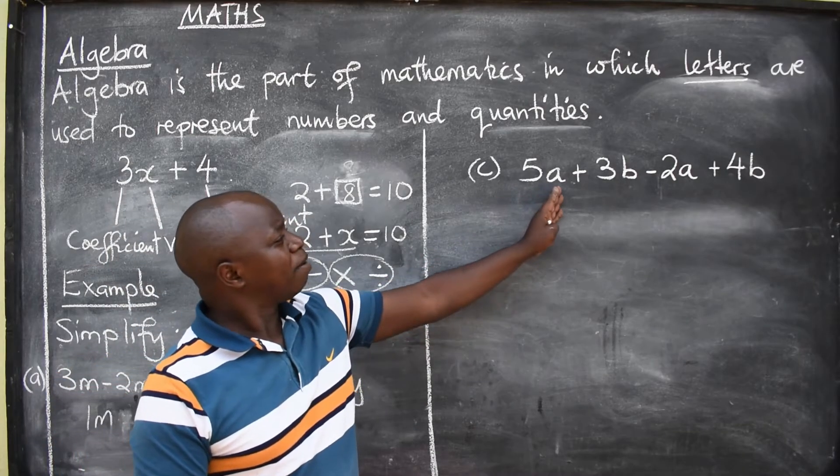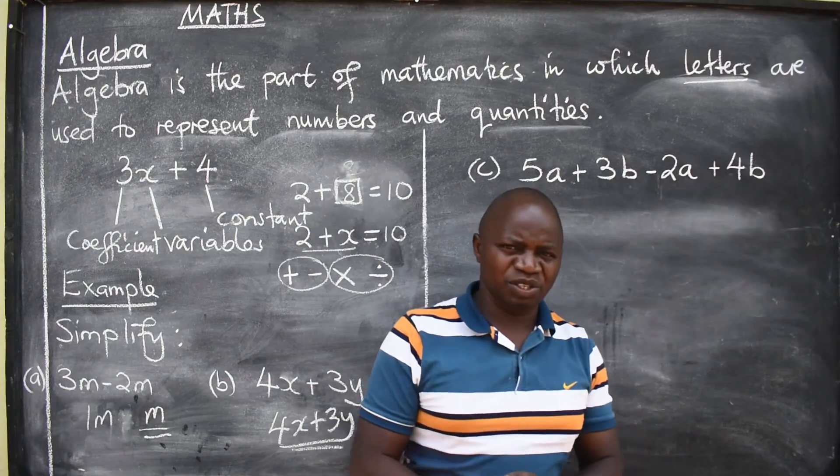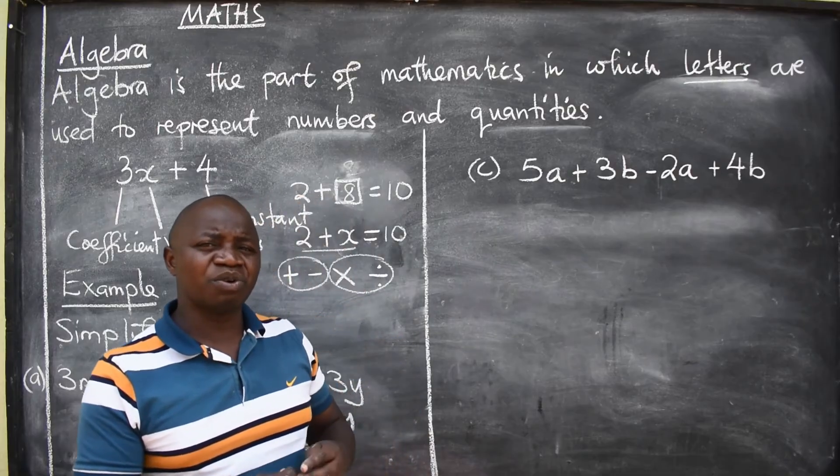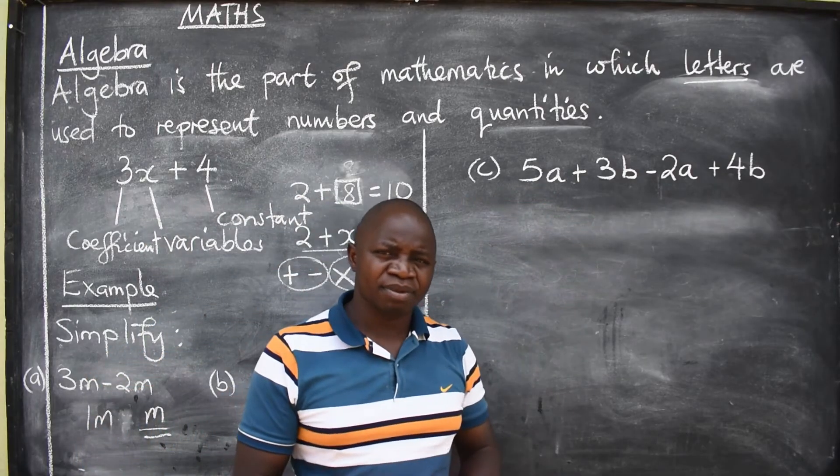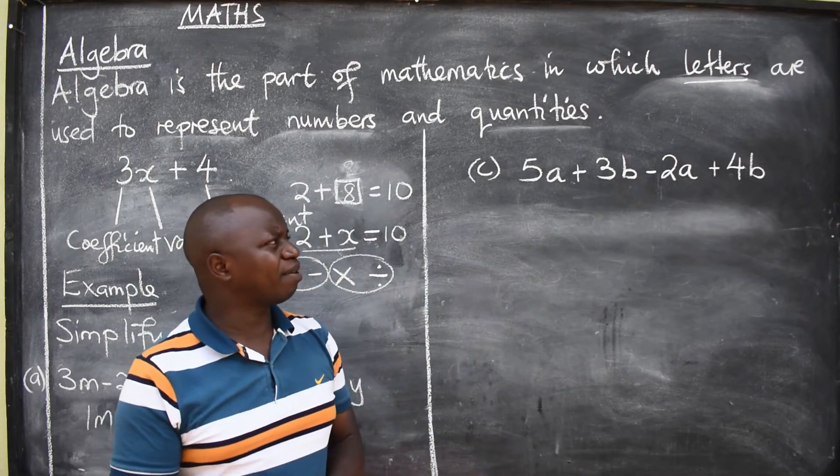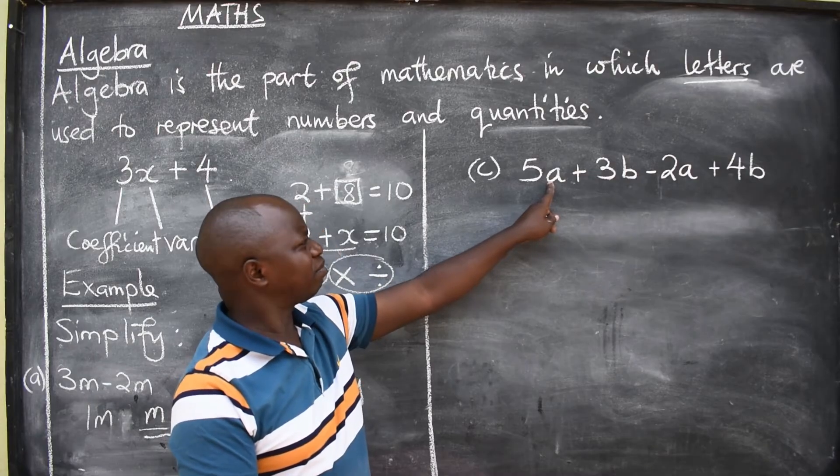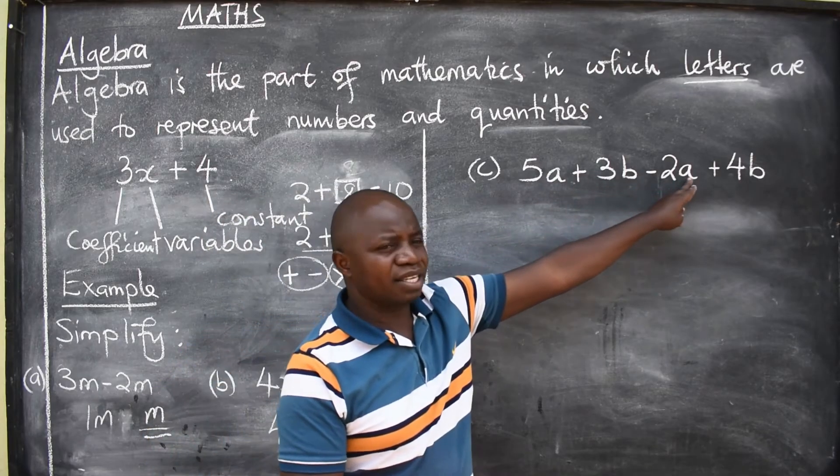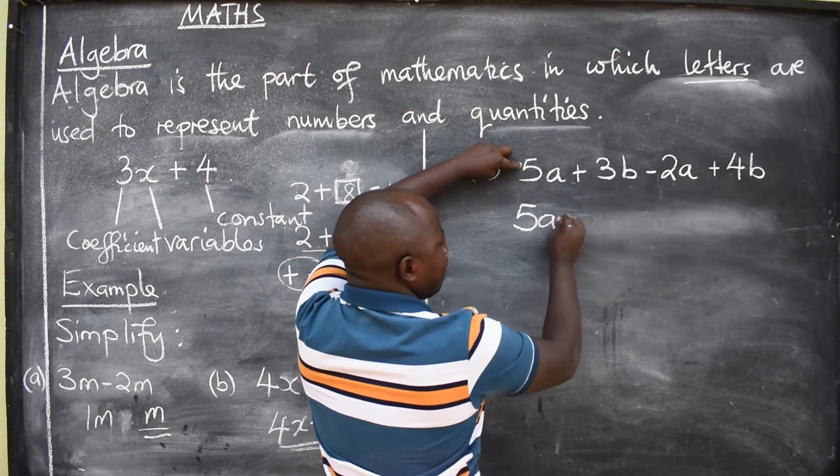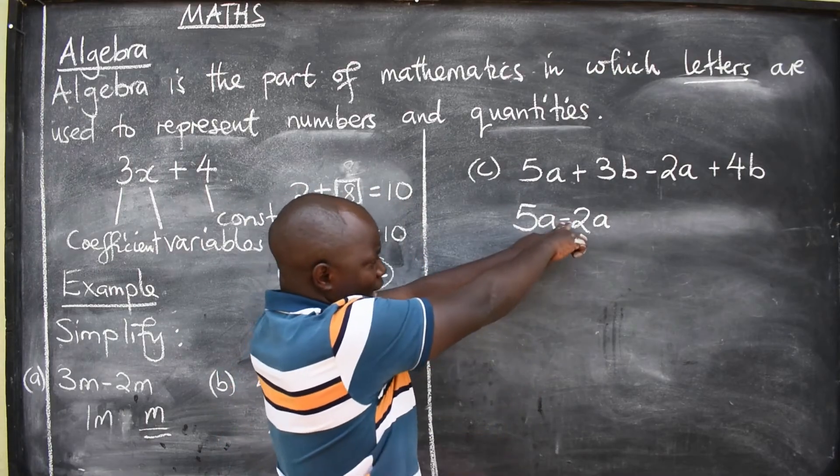We now proceed to C. 5A plus 3B minus 2A plus 4B. What do you do? The first thing is for you to rearrange this. You start grouping them - like terms must be next to each other. I've got 5A. Do I have another one with A here? It's here. So I'll be able to say 5A, the pair is here, minus 2A. Now, check this. Minus here, minus here.